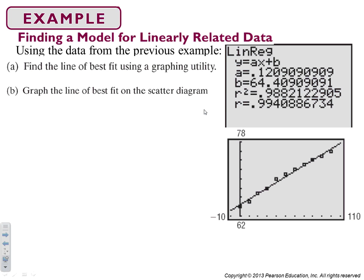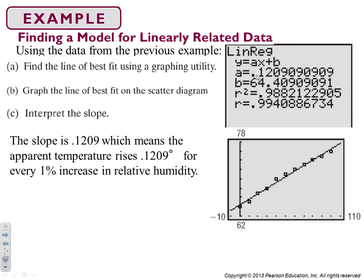We graph it on the in y equals. And then interpret the slope. Remember the slope is 0.1209 and it means that the temperature rises 0.1209 degrees for every one percent increase in humidity.